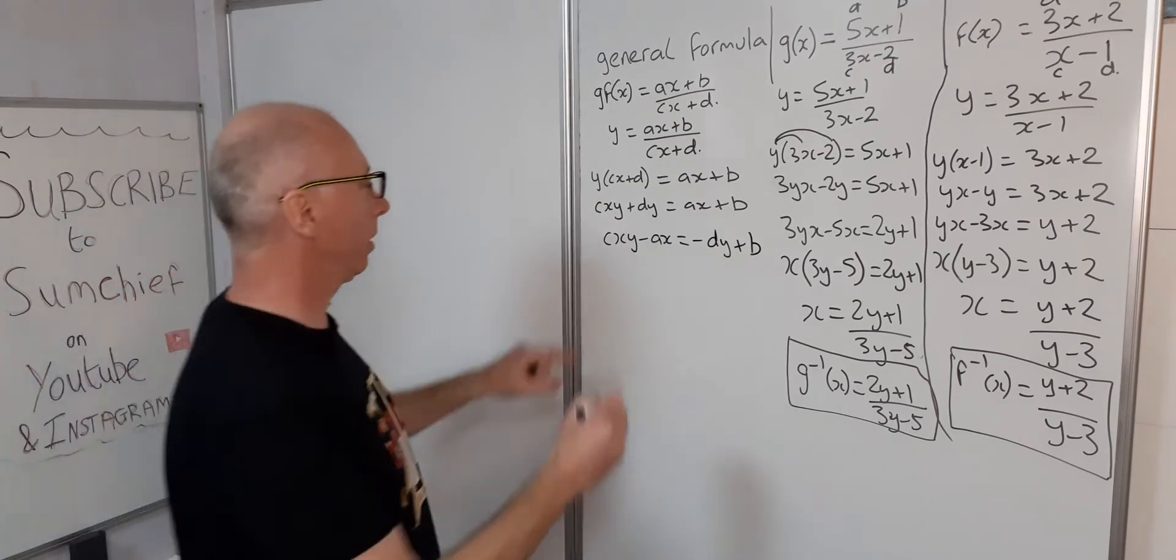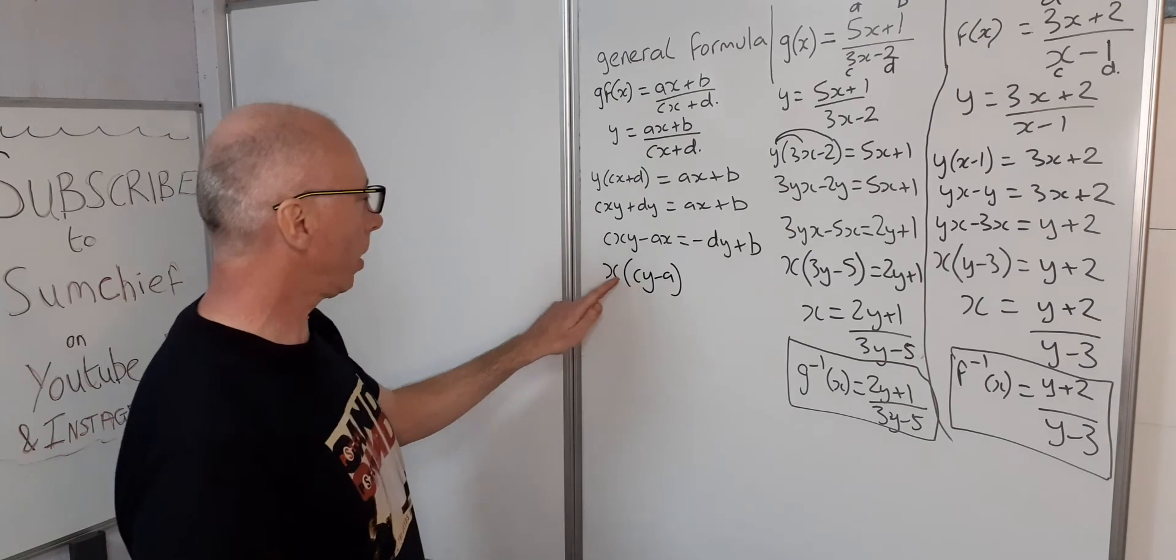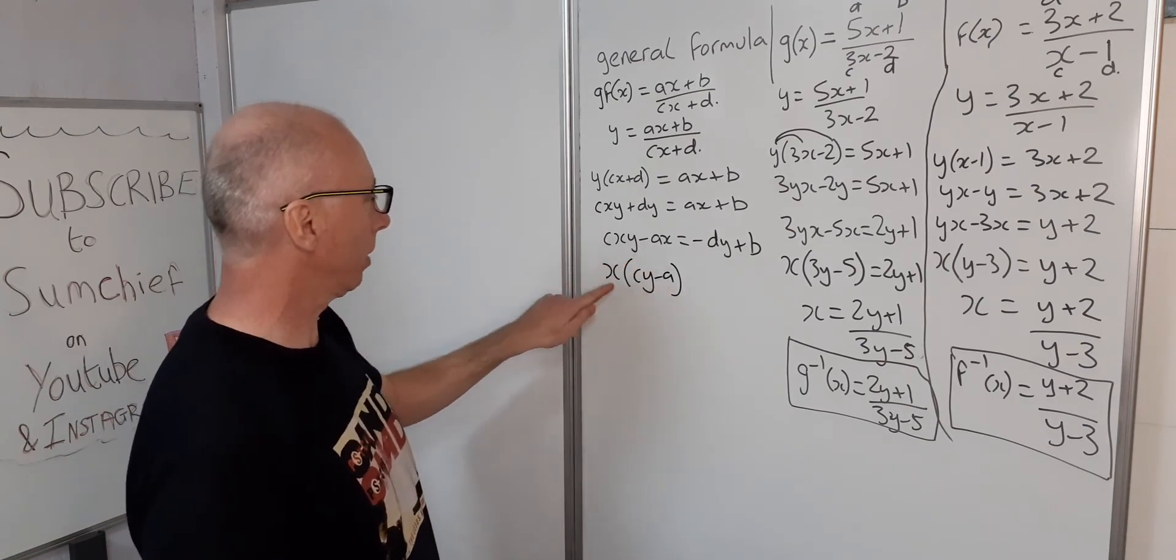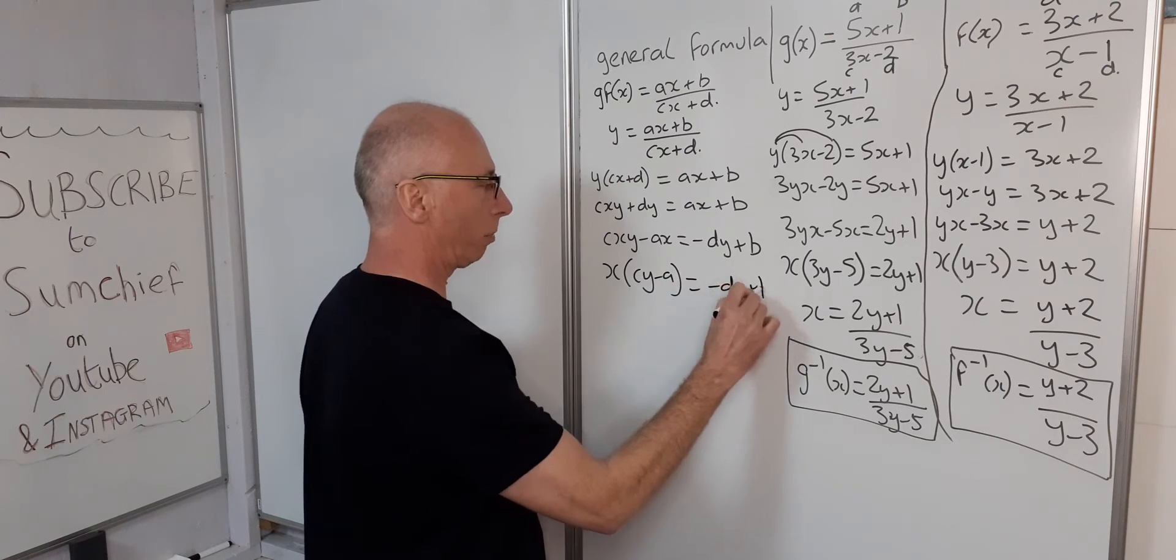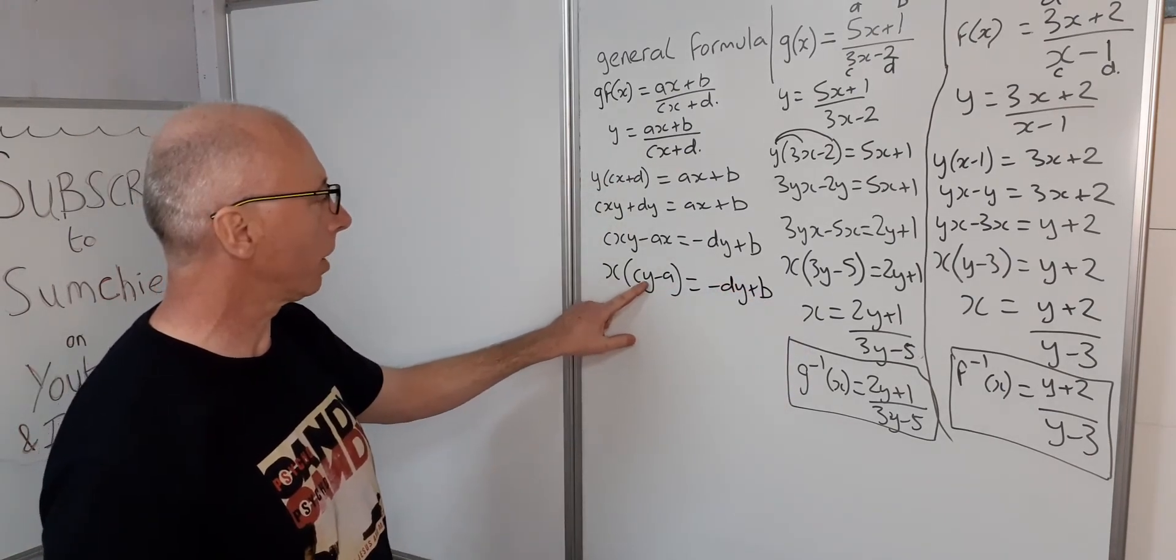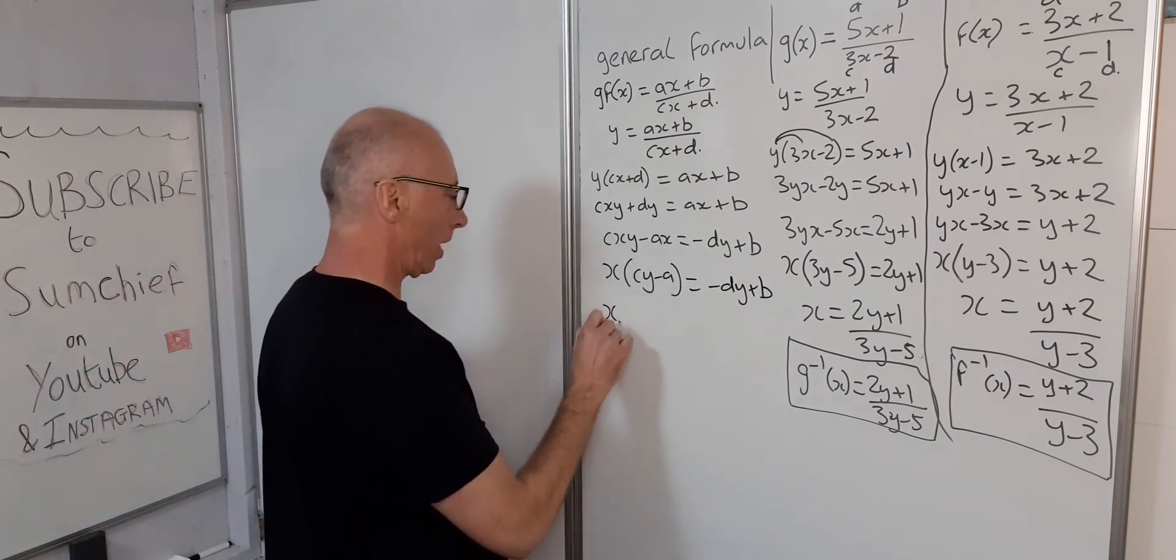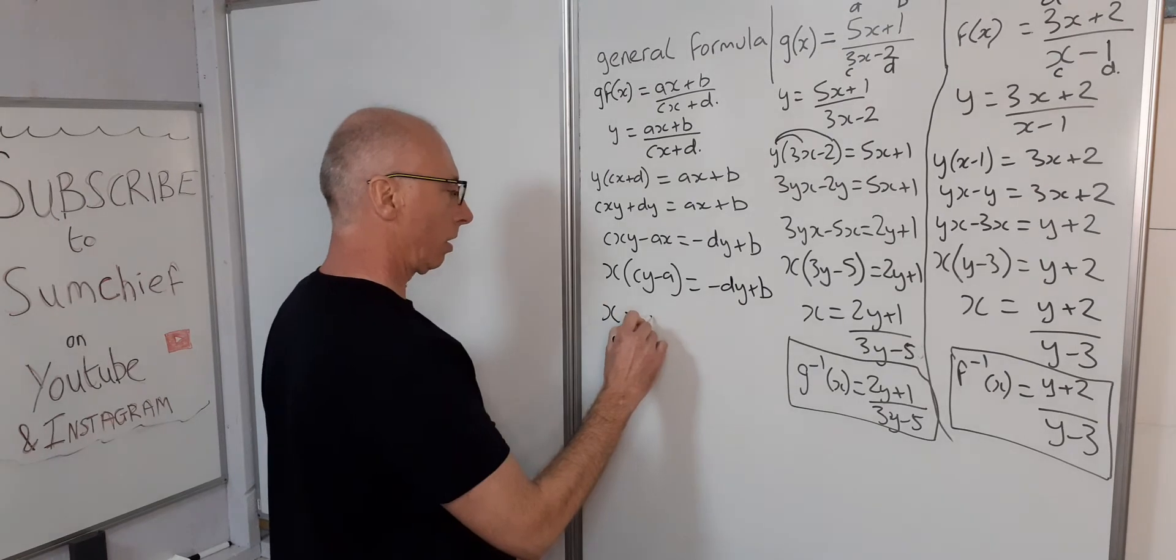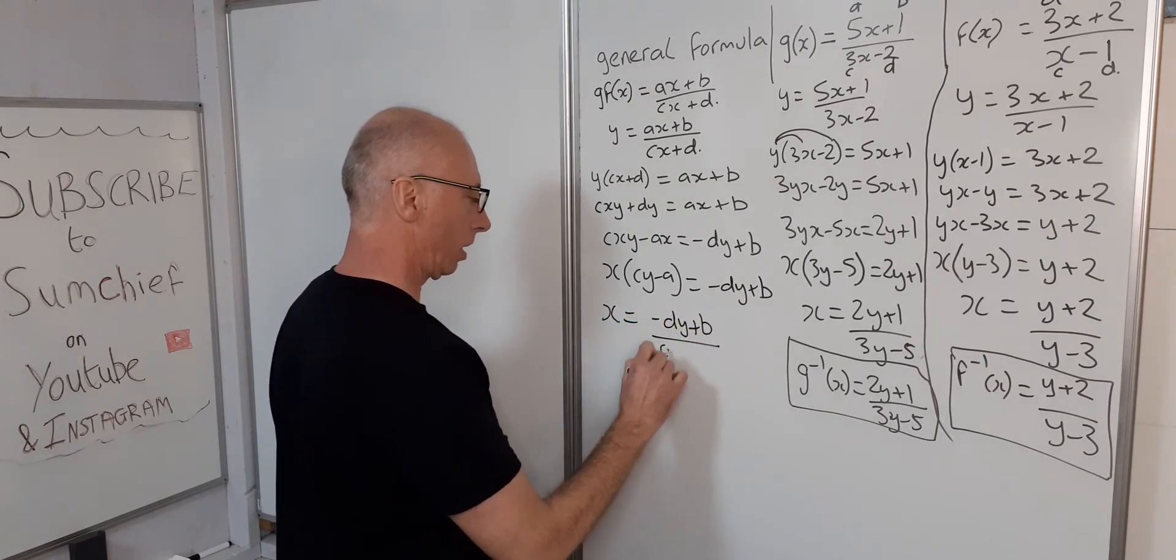Now factor out the x. See what we got: cy minus a times x equals minus dy plus b. Okay, all that's left now is to divide both sides by cy minus a to get the x on its own. So x equals minus dy plus b over cy minus a.